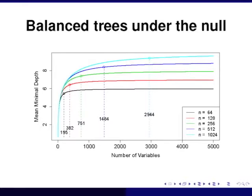So the question is, what's the cutoff? To study this, we looked at the null distribution of minimal depth under the assumption of a balanced tree. A balanced tree is like a Christmas tree — at any given depth D, you have 2^D nodes. So you have 1, 2, 4, 16, 32, 64...